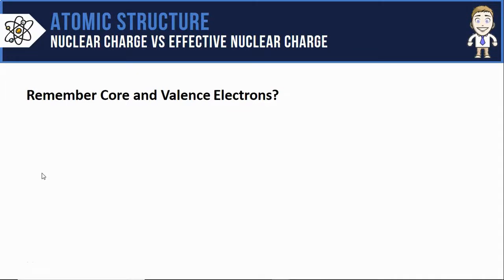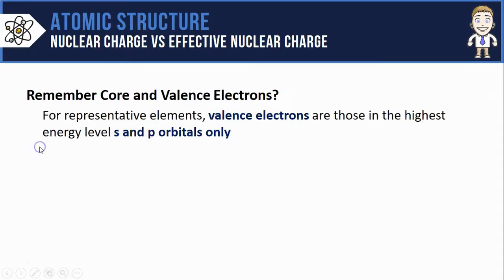To do this you need to remember that there's a difference between core and valence electrons. The valence electrons are the outermost ones and you'll find them in the highest energy level s and p orbitals only.